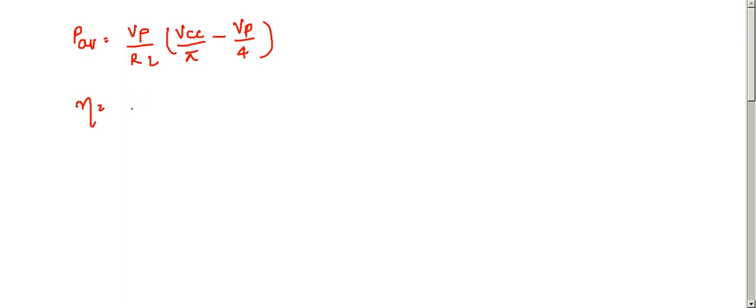Now, we have seen that the efficiency is equal to pout upon p-circuit plus pout. pout, we can write it as v square p upon 2RL upon